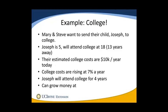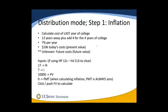Let's look at Mary and Steve. They want to send their child Joseph to college. Joseph is 5 years old, he'll attend college at age 18 — 13 years from now. Their estimated college costs are $10,000 a year today. College costs are rising at 7% per year, Joseph will attend college for four years, and Mary and Steve feel comfortable that they can grow money at 8% per year.